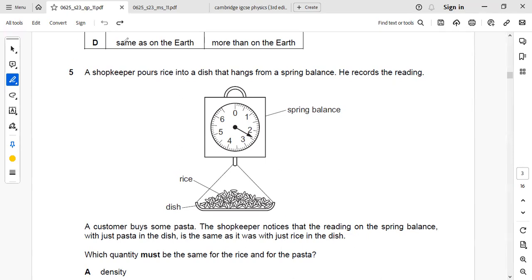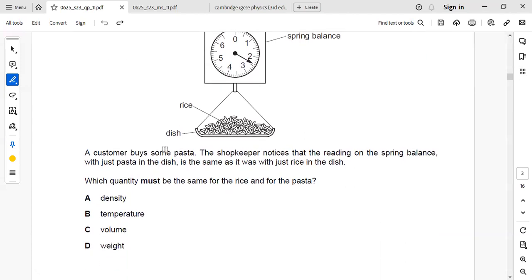So we are using this spring balance for measuring weight and mass. We cannot measure density, temperature, and volume. So the answer is weight, D. With spring balance we can measure weight and mass.